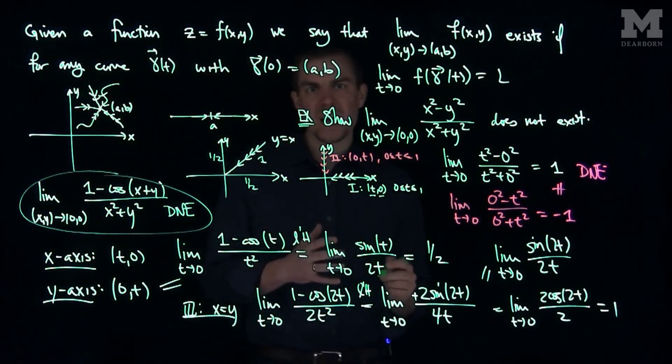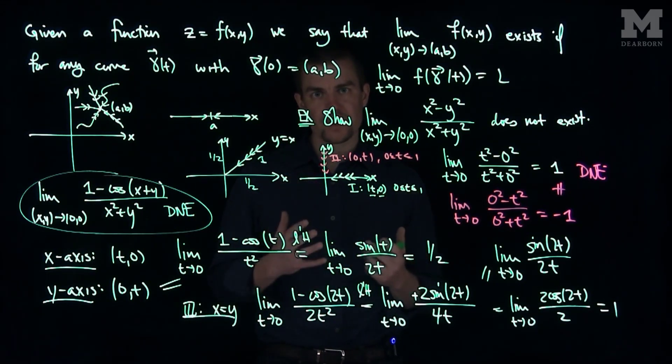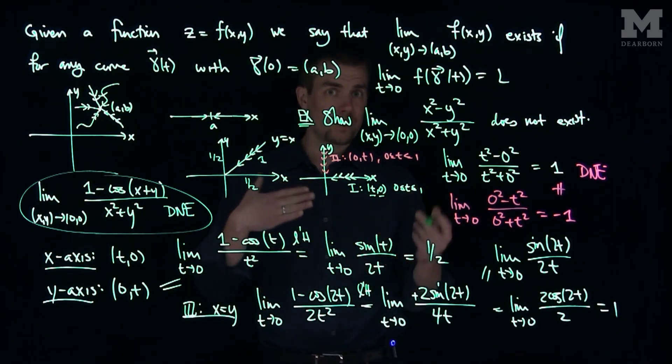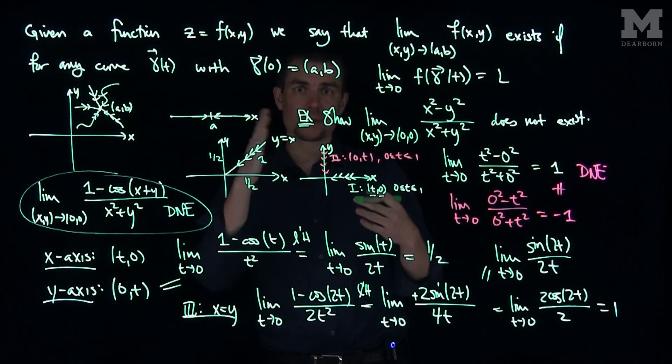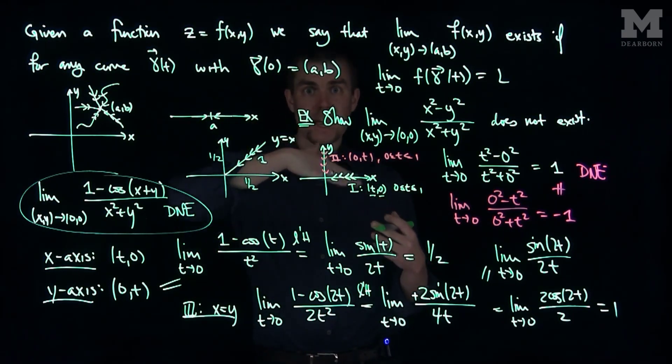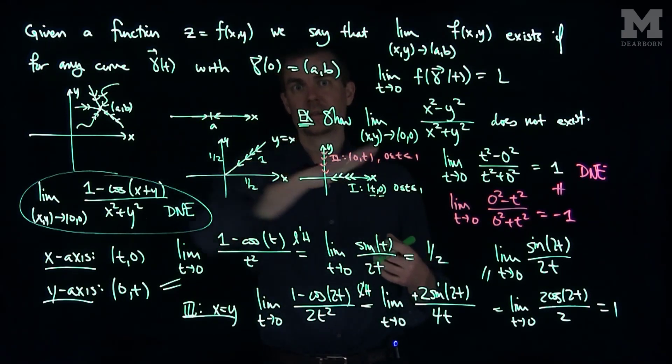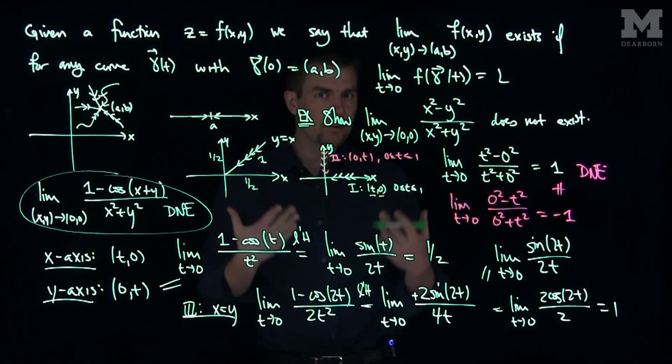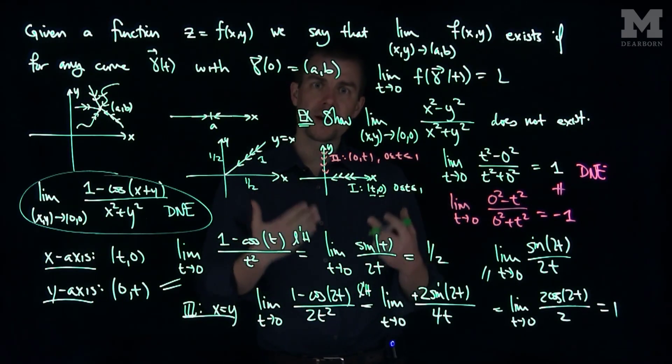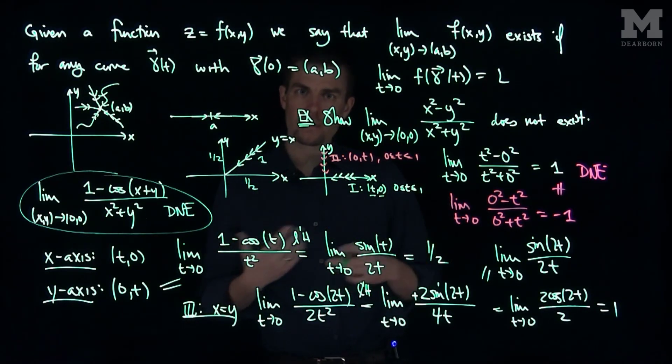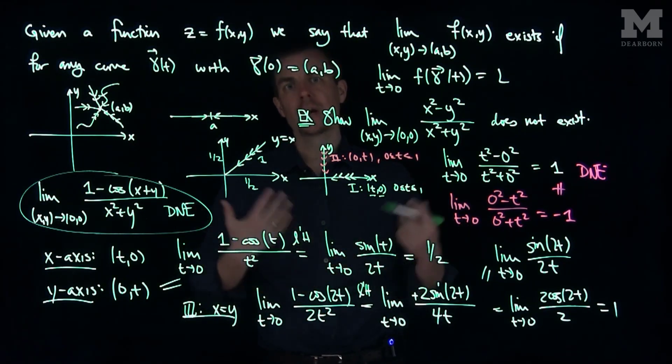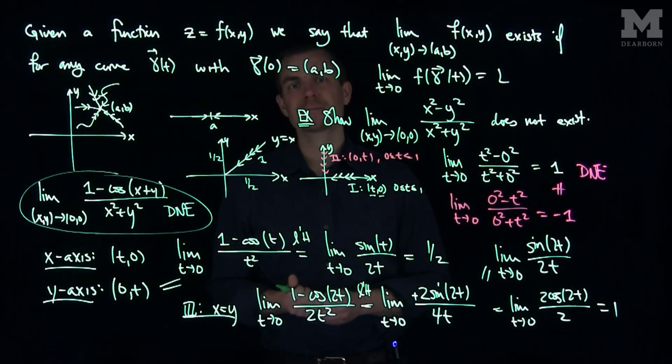And so we can see, often times when computing these limits, we're trying to show a limit that doesn't exist. We look along, going through the origin for example, we look along the x-axis, the y-axis, the line y equals x, any line that goes through the origin, different types of parabolas. There are many different curves to test, but usually if you try either a parabola, a square root curve, a straight line, or the axes, you can show that the limit doesn't exist. Thank you very much.